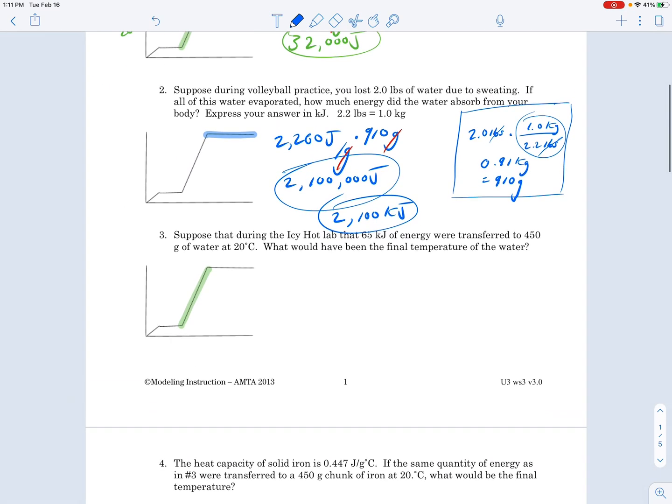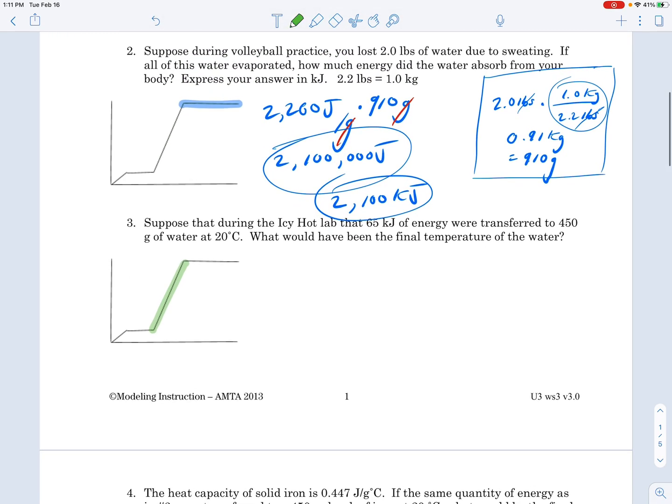Number three: we're dealing with the middle part of the heating curve again. The number we're working with is 4.18 joules over grams degrees Celsius. The question says, suppose that during the icy hot lab, 65 kilojoules of energy were transferred to 450 grams of water at 20 degrees Celsius. What would have been the final temperature of the water? This time we have to find the final temperature.